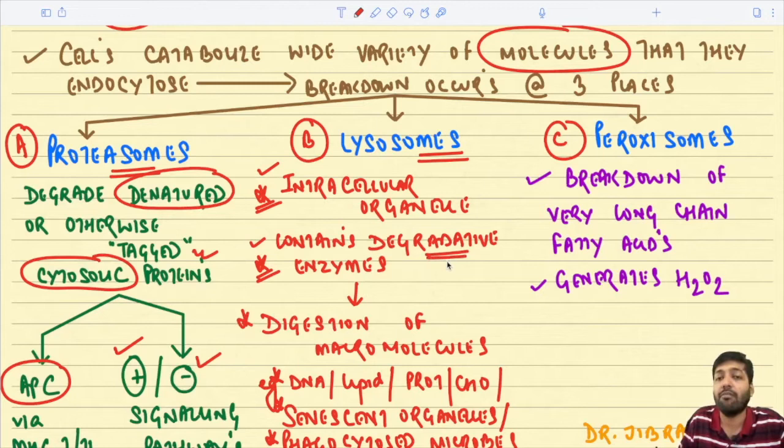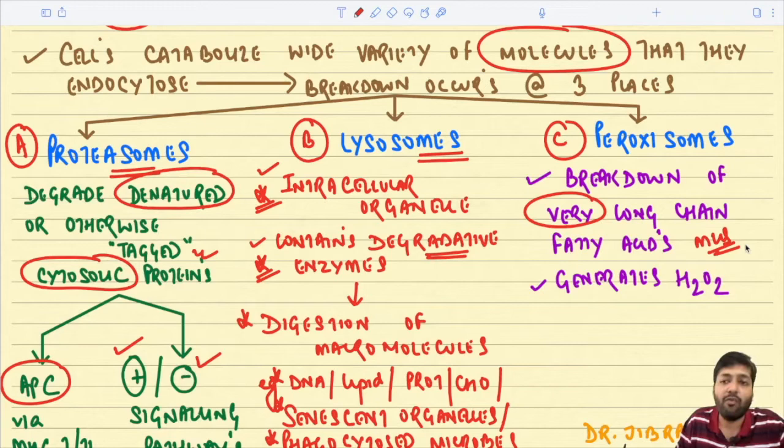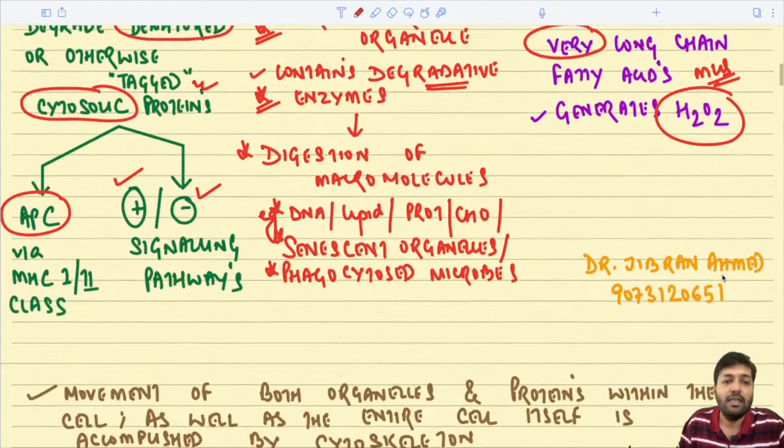Peroxisomes are responsible for breakdown of very long chain fatty acids — an important MCQ point — and during this process hydrogen peroxide is generated.